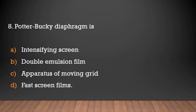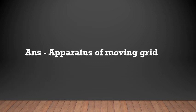The Potter-Bucky grid form uses an intensifying screen with a double emulsion film. It is an apparatus of a moving grid used with fast screen films.